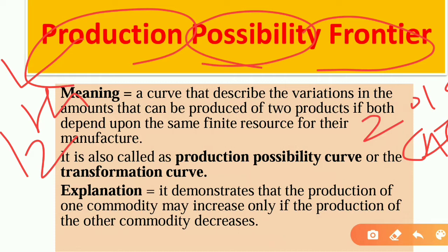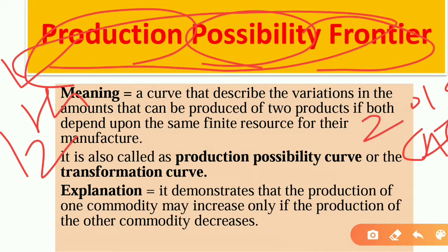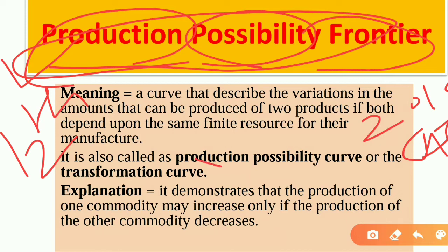So let's understand the production possibility frontier. This is also called the production possibility frontier (PPF), the production possibility curve, or the transformation curve.